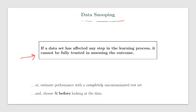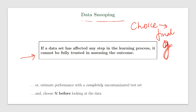How does that work? We use data for learning, which means we make use of the data to make some choices. The choice we make using that data is to select our final hypothesis — final H or G. Now, if we want to use the same data to assess the performance of G, that data has already affected the process that generated G, my final hypothesis. So using it again to assess performance means the data has been contaminated and is not trustworthy.